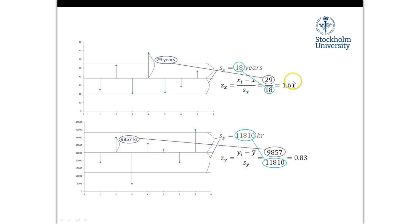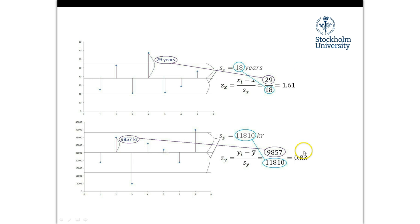In a way, we are calculating each observation's share of the variation relative to the standard deviation. This distance is 1.61 compared to the standard deviation — it's larger than the standard deviation. Meanwhile, this distance is smaller than the standard deviation, giving us 0.83. The standard deviation itself equals 1 in these standardized units, so we are measuring variation around the standard deviation. This gives us standardized numbers that describe variation around the mean in a way that allows comparison between variables.